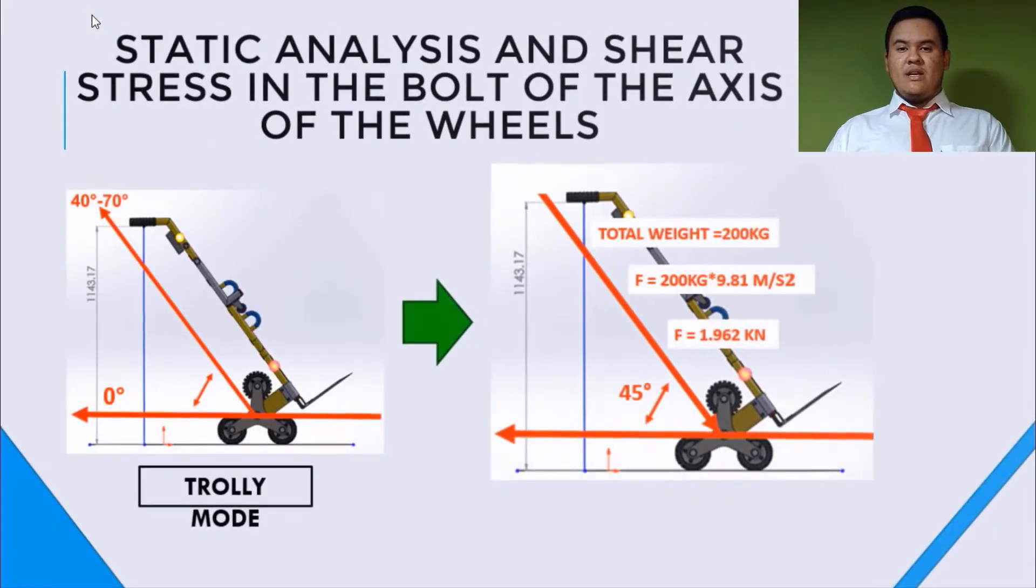General calculations and control system. Static analysis and shear stress in the vault of the axis in the wheels. Okay. The trolley has two models of operate. The trolley mode that is in 45 degrees and the car mode. And this has two axis and four wheels.